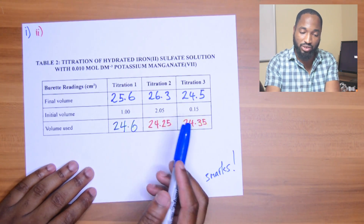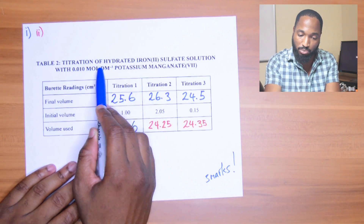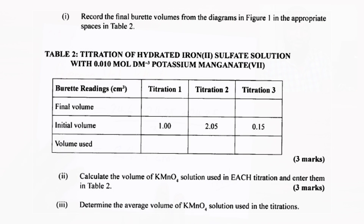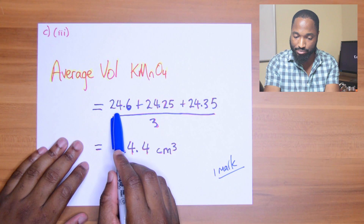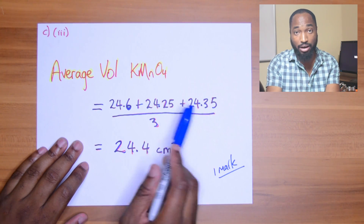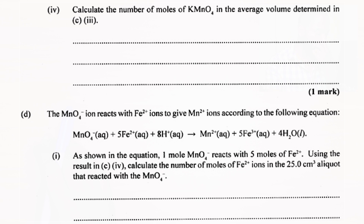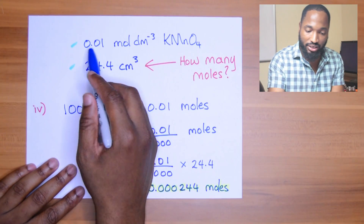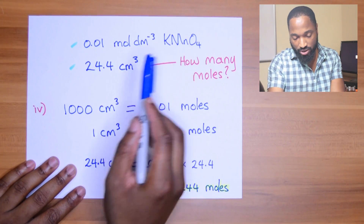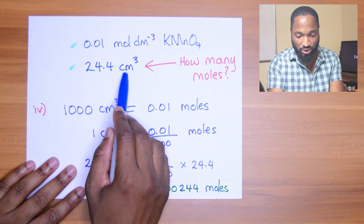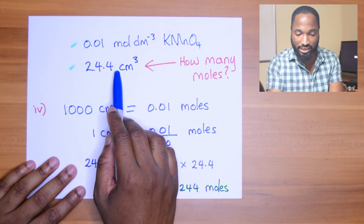We had 0.01 mol per dm³ of potassium manganate. Next, they ask us to find the average volume of potassium manganate solution used - add up all the volumes and divide by three. That gives you your average. About here in the question is where things start to get interesting: calculate the number of moles of KMnO4 in the average volume determined. So you have 0.01 mol per dm³ and 24.4 cm³ average used - now how many moles is that?